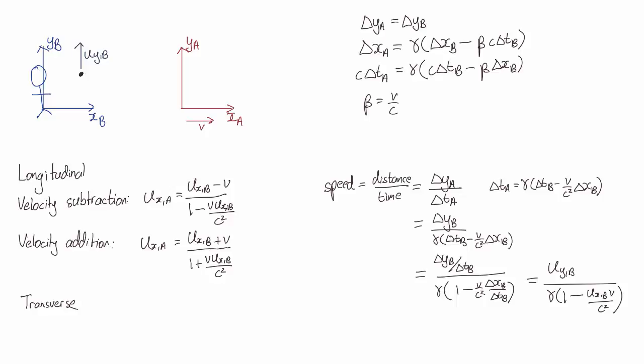So in the situation drawn, it has no motion along the x-axis. It's just moving along the y-axis, in which case this reduces to UyB on gamma.